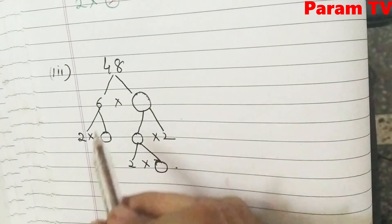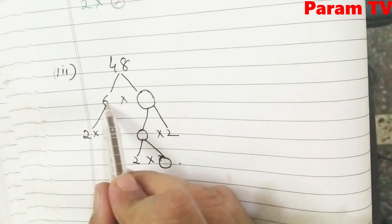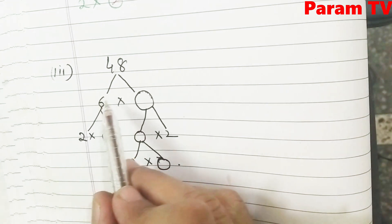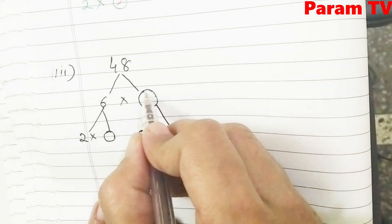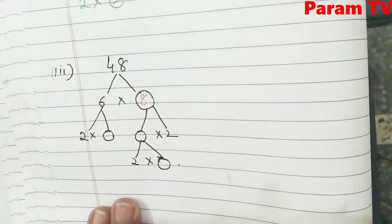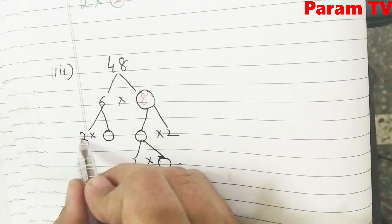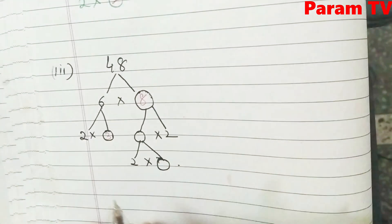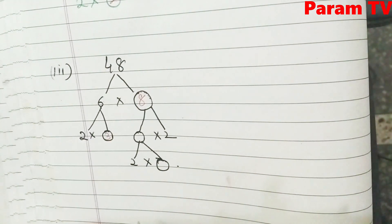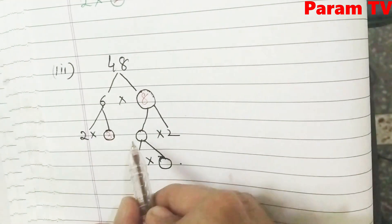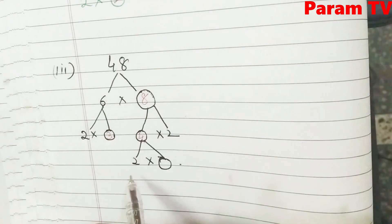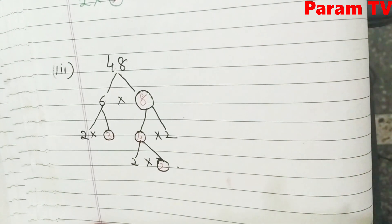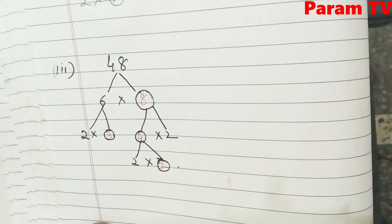Here, look — 6: when you see 48 in the 6 table, where does it come? 6 eights are 48. Now for 6, further factors: 2 into 3 — 2 threes are 6. Here: 4 twos are 8, and 2 twos are 4. Here we have completed it.